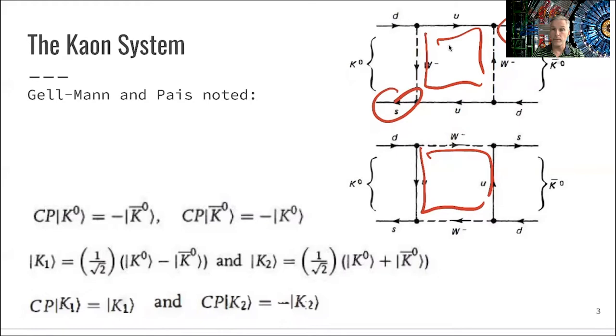If you want to analyze this further, you might want to find the eigenstates to this. The eigenstates can be found as those K1 and K2, which are mixtures of the K0 and the anti-K0. You find this symmetric and antisymmetric states. If you apply CP on the eigenstates, you find eigenvalues of 1 and minus 1.